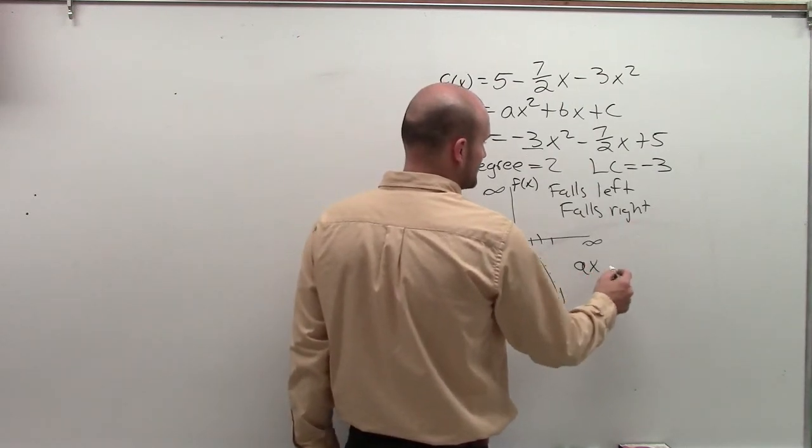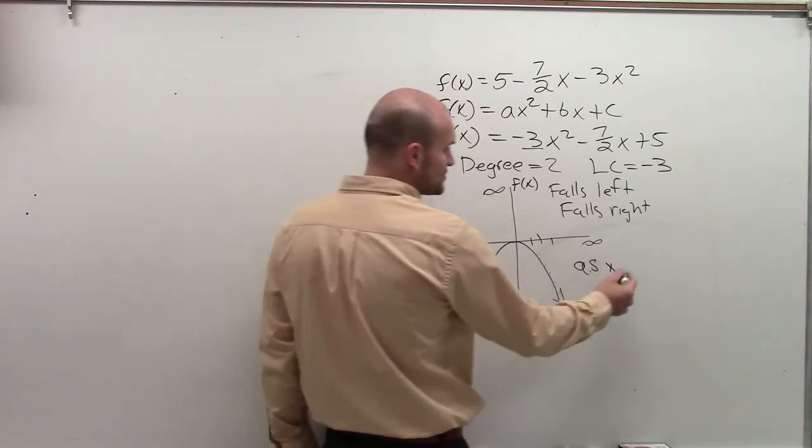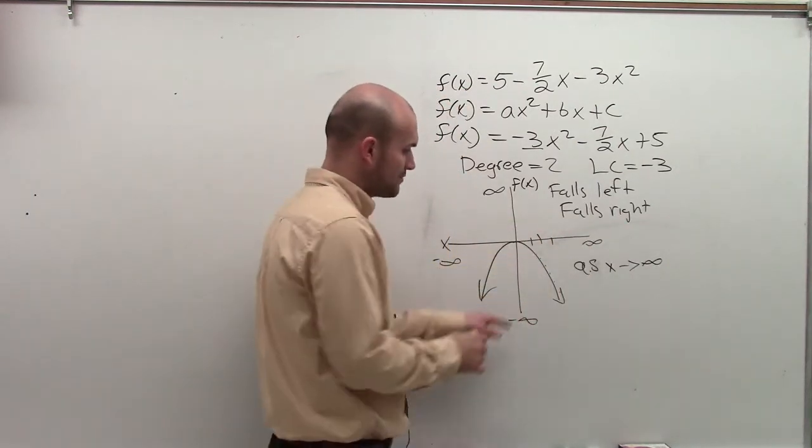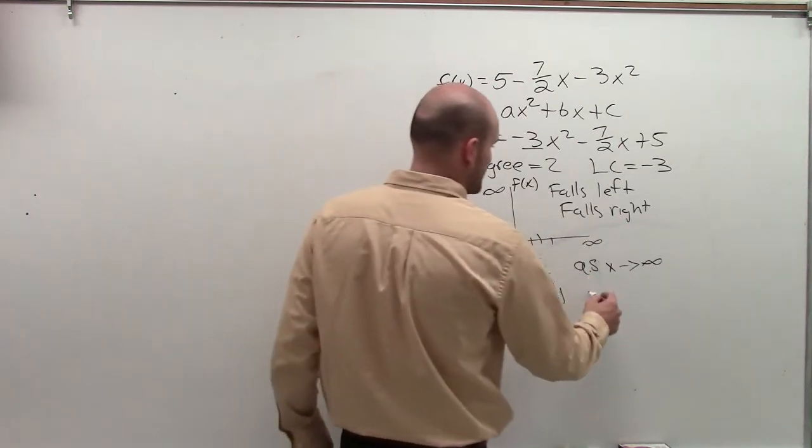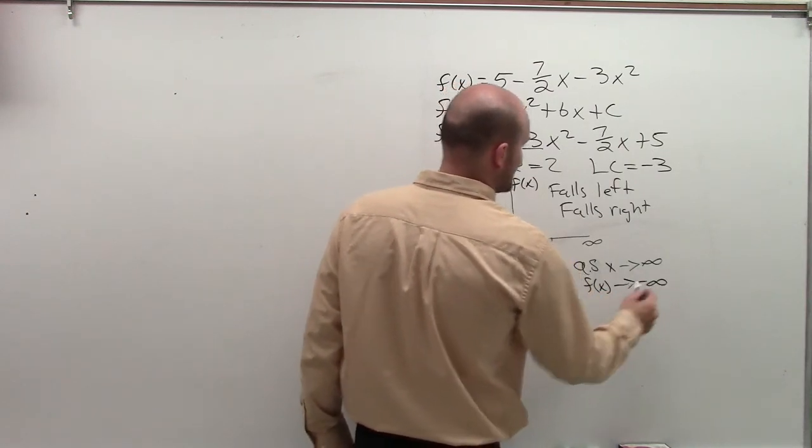So as my x values approach infinity, so as I go to the right, where does my graph go? My graph goes to negative infinity. f(x) approaches negative infinity.